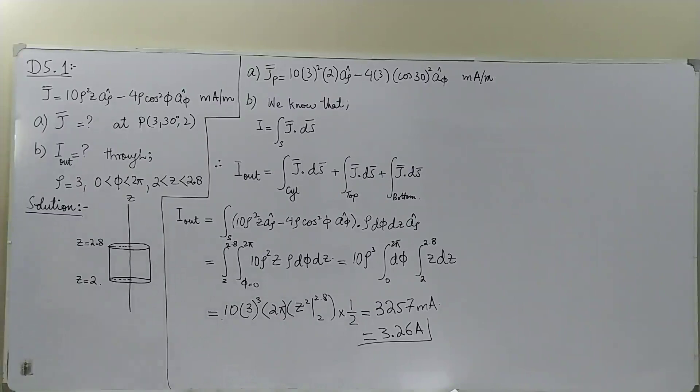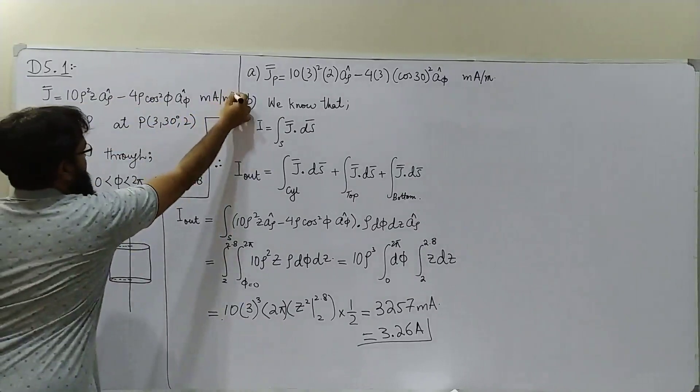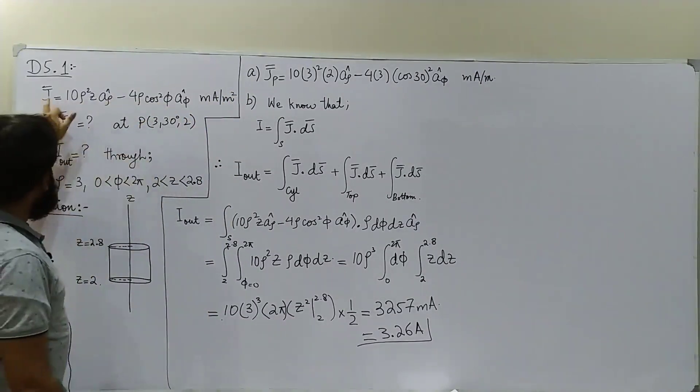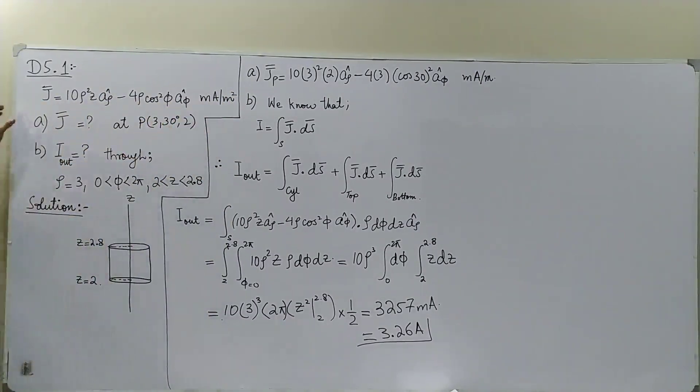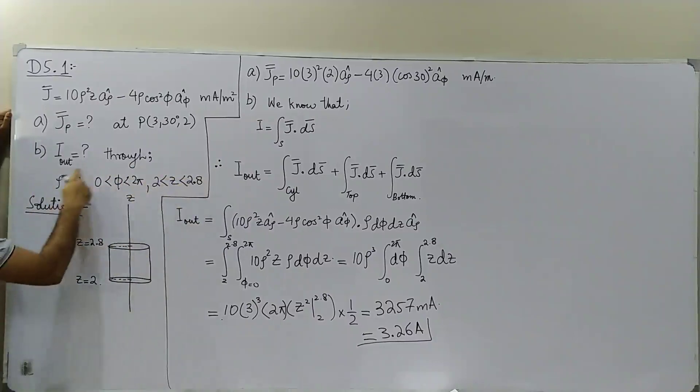In the problem we have been given this current density J in milliamperes—remember, milliamperes per meter square. This is something that should be remembered. In part (a) we have to find J at some point P and the coordinates are given. Very trivial case, let me call it Jp, and the total current which is coming out through this region.